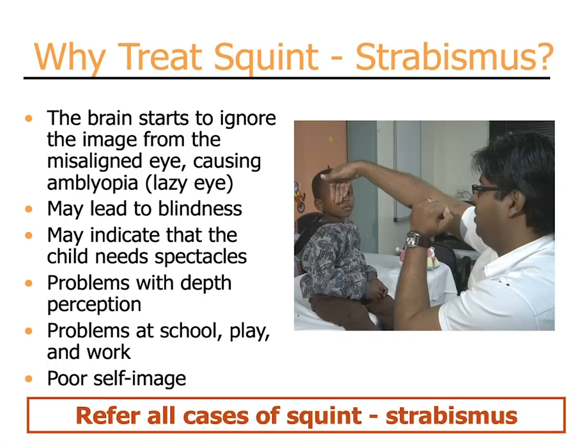Sometimes the treatment of squint or strabismus can be as easy as providing eyeglasses or spectacles. In addition to producing amblyopia, misalignment of the eyes can lead to problems with depth perception, difficulty with school, play, or work, and poor self-image or teasing by other children. You should refer all cases of suspected squint or strabismus.